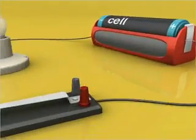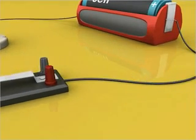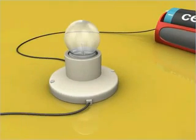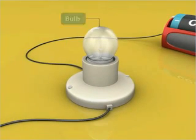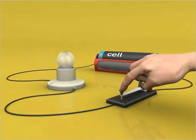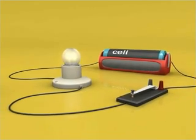As we close the key, the bulb glows. This is because on closing the key, the circuit gets complete. An electric current flows through it, making the bulb glow.